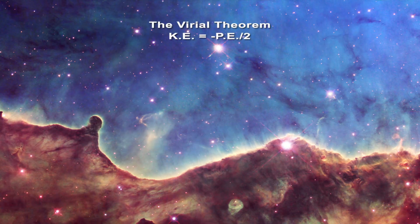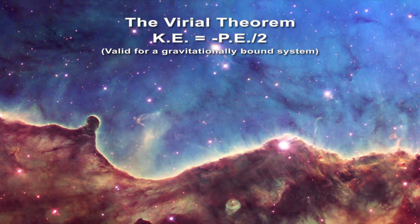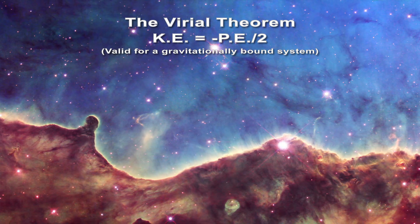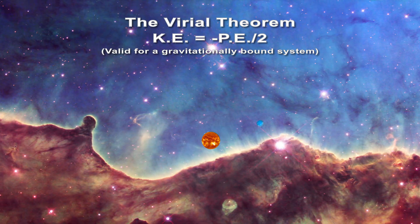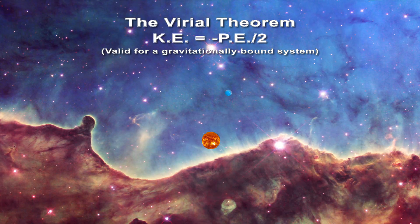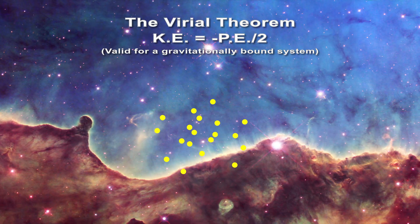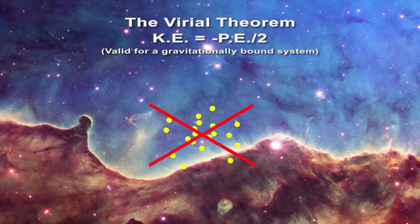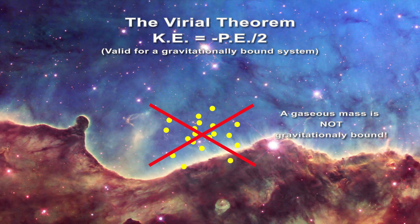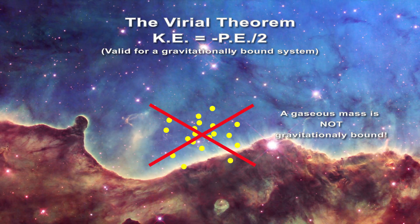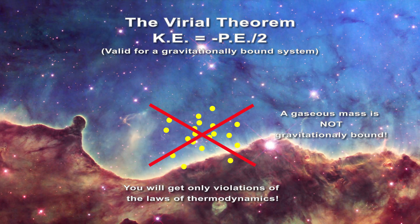You recall that the Virial theorem states that in a gravitationally bound system, the kinetic energy of the system is equal to minus one half of the potential energy. The equation works well for systems such as a planet going around the sun. However, astronomers, beginning with Eddington, have extended its use to a gravitationally collapsing gaseous mass. Why is that analysis now invalid? The easiest explanation is that a gaseous mass does not constitute a gravitationally bound system. Therefore, the application of the Virial theorem to such a problem will yield only violations of thermodynamics.